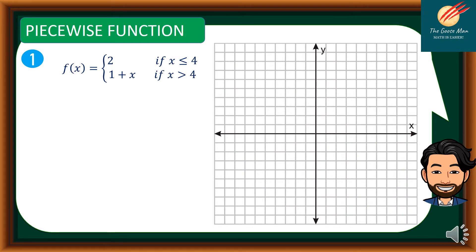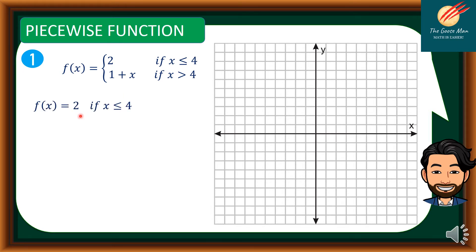For piecewise function number one: f(x) = 2 if x is less than or equal to 4, and f(x) = 1 + x if x is greater than 4. In order to illustrate this, let's use the table of values.